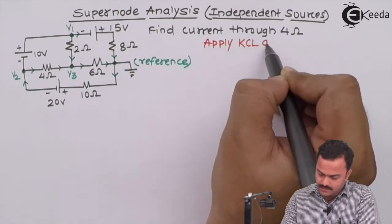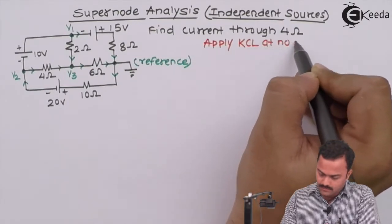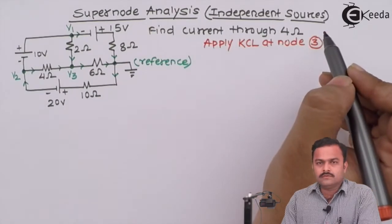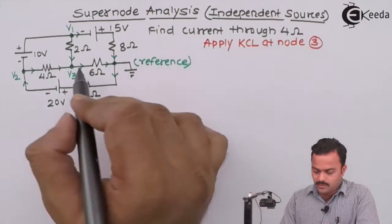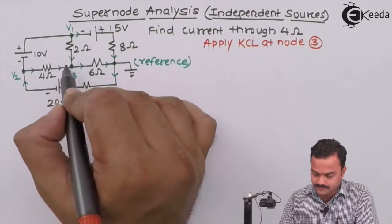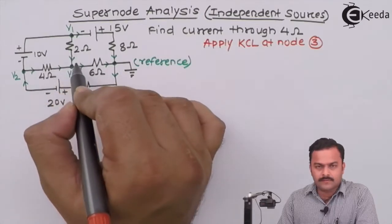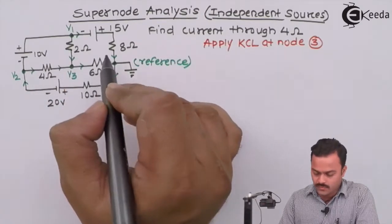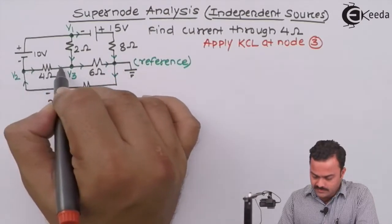So apply KCL at node 3, which is free from all this problem of voltage source present between the two nodes. Three branches are meeting: out of that, two are incoming, one is outgoing. Let's write the equation for this.